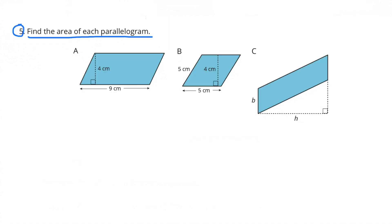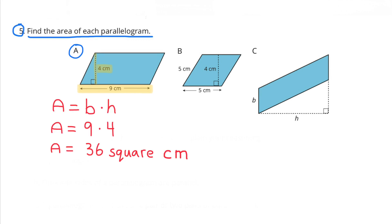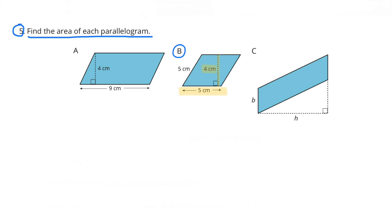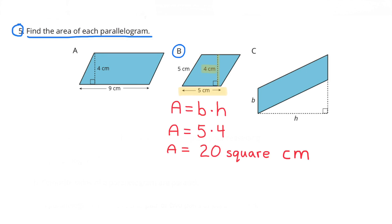Number 5: Find the area of each parallelogram. A: The base is 9 centimeters and the height is 4 centimeters, so 9 times 4 is 36. The area would be 36 square centimeters. B: The base is 5 centimeters, and you'll notice the 4 centimeter measurement creates a 90 degree angle with the base, so the height is 4 centimeters. Base times height, or 5 times 4, equals 20 square centimeters.